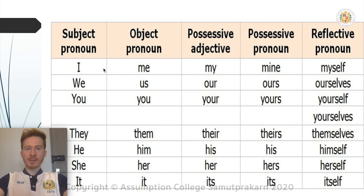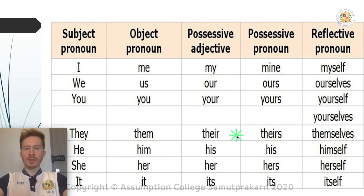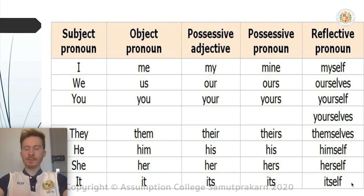Subject pronouns include I, we, you, they, he, she, it. The object pronouns are me, us, you, them, him, her, it. Possessive adjectives are my, our, your, their, his, her, its. Possessive pronouns are mine, ours, yours, theirs, his, hers, and its. And finally, reflexive pronouns are myself, ourselves, yourself, yourselves, themselves, himself, herself, or itself.